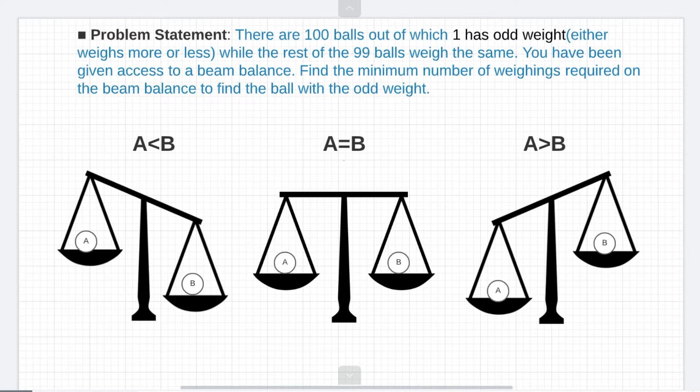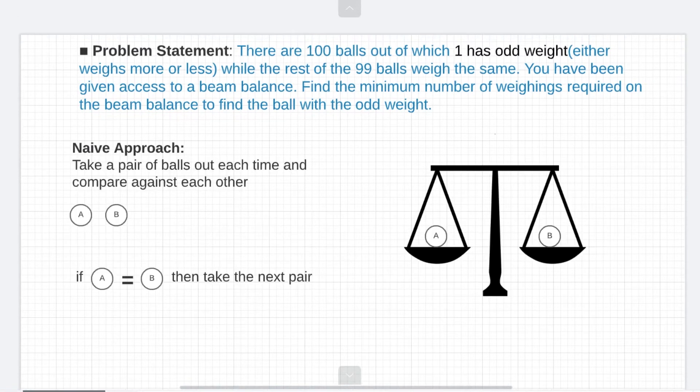And just from this much information we can come to our first approach towards this problem which is the most basic or the most naive approach. So what we do here is take a pair of balls out each time and compare them against each other. If the weights are equal then we put them to the side and then pick on the next pair.